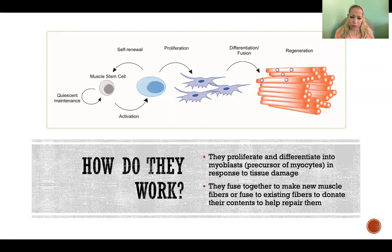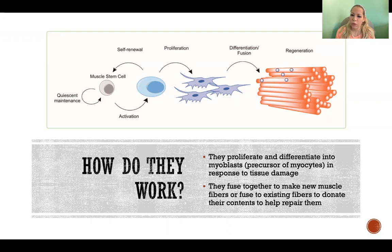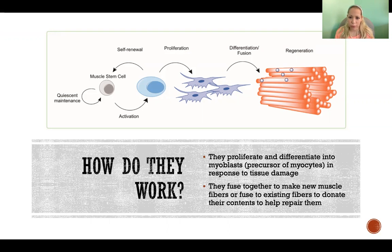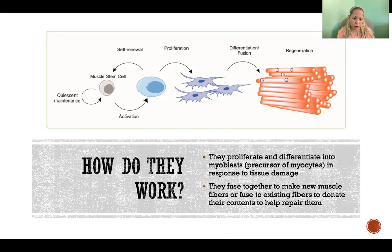Those myoblasts then either fuse together and create whole new muscle fibers, or sometimes they fuse to existing fibers to help them repair and recover. Their cell membranes fuse with the existing fiber's cell membranes so that their cellular contents — including nuclei, mitochondria, and all the other organelles — are added to the existing muscle fiber, helping it repair and recover more quickly.